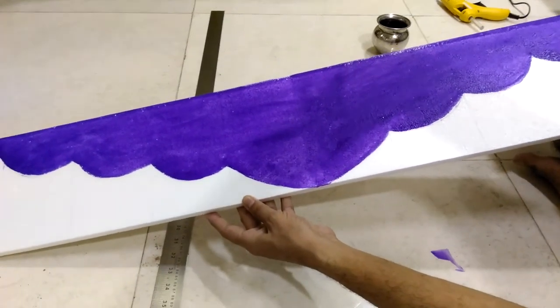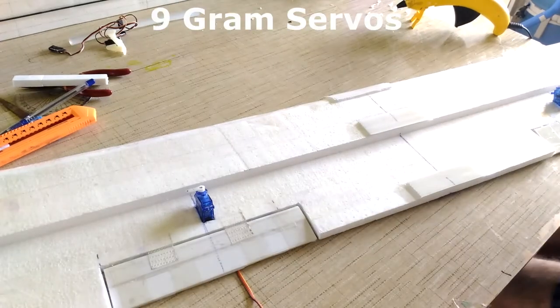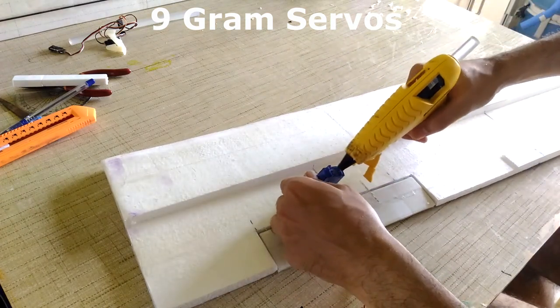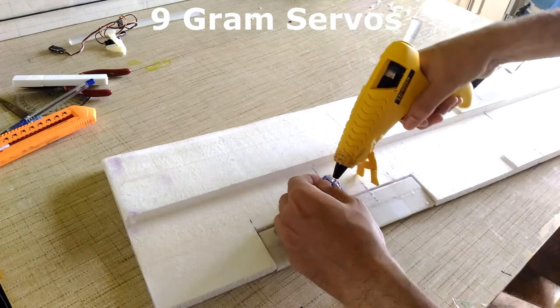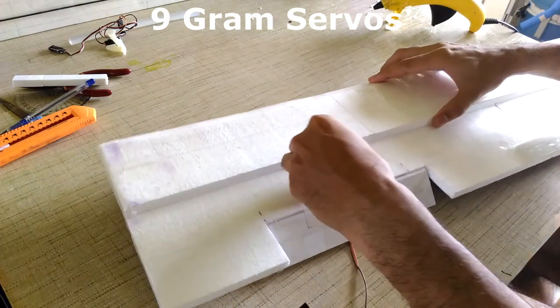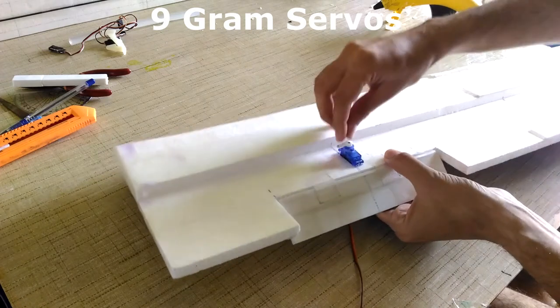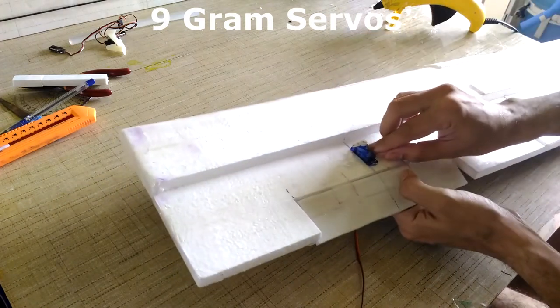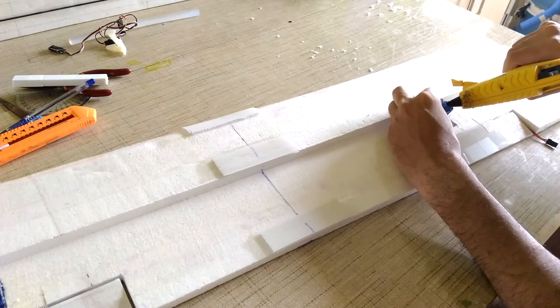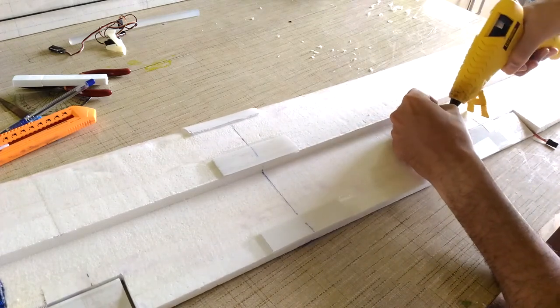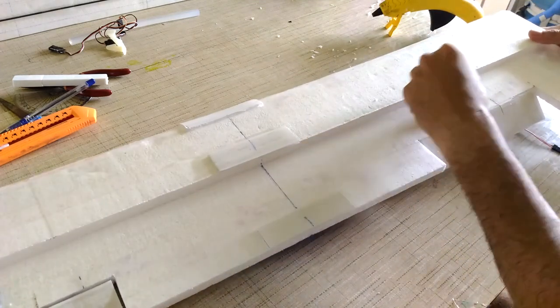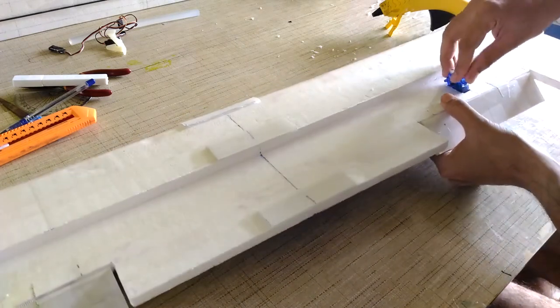Moving forward I made the ailerons with coroplast and the hinges are made with the packing tape and here I am using 9 gram servos. 2 slots are made for fitting the servos. One servo is done and I am repeating the exact same process on the other side. So second servo is done.